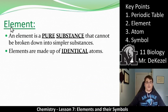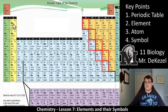So, first of all, an element. An element is a pure substance that cannot be broken down into simpler substances. Elements are made up of identical atoms and each of these is an element. So, beryllium is an element. Boron is an element. Phosphorus is an element.